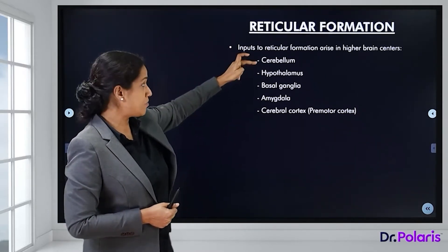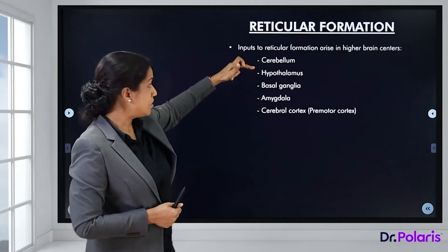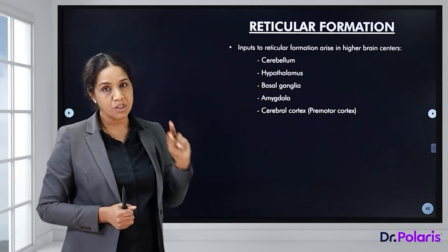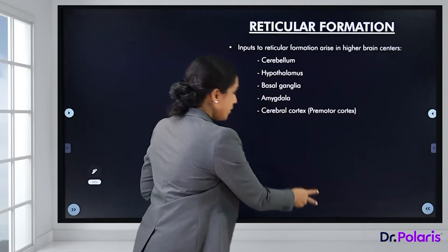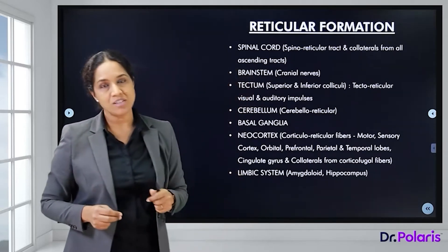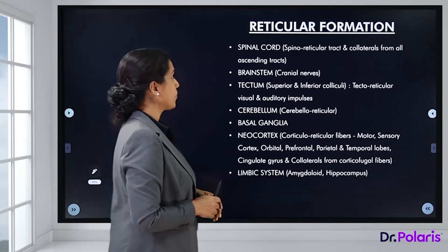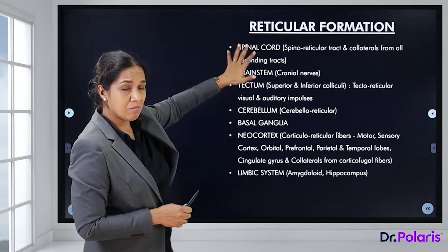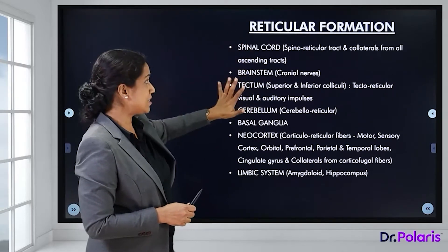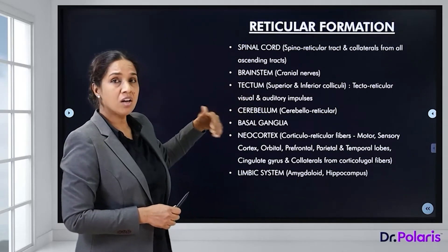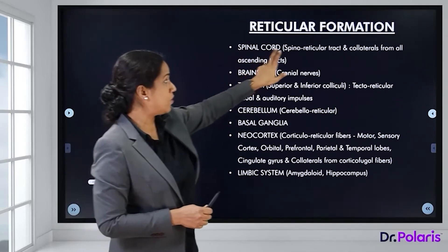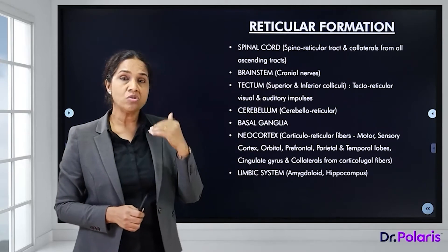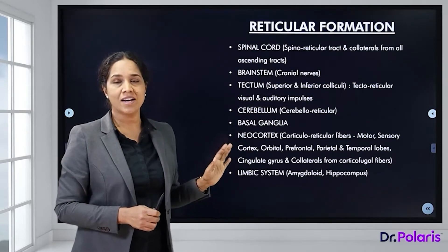The reticular formation receives inputs from five higher centers: cerebellum, hypothalamus, basal ganglia, amygdala, and the premotor cortex. The spinal cord also sends input to the reticular formation via the spinal reticular tract, and collaterals from all ascending tracts are sent to the reticular formation as they travel upward.